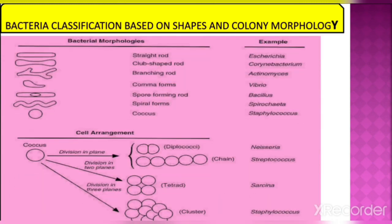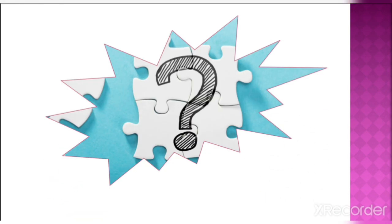Classification based on shapes and colony morphology. Here we can see bacterial morphologies and their examples: straight rod — Escherichia coli; club-shaped rod — Corynebacterium; branching rod — Actinomyces; comma form — Vibrio; spore-forming rod — Bacillus; spiral form — Spirochaete; coccus — Staphylococcus. In cell arrangement, coccus with division in one plane is known as diplococcus or chain — example Neisseria or Streptococcus; division in two planes gives a tetrad — example Sarcina; division in three planes gives a cluster — that is Staphylococcus. If you have any questions, you can comment. Thanks a lot.